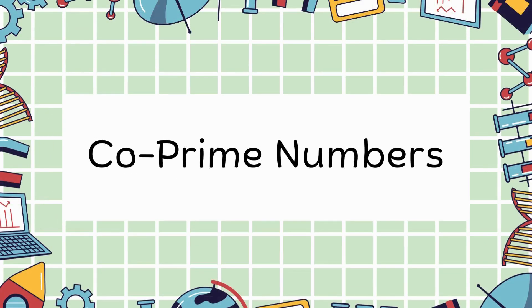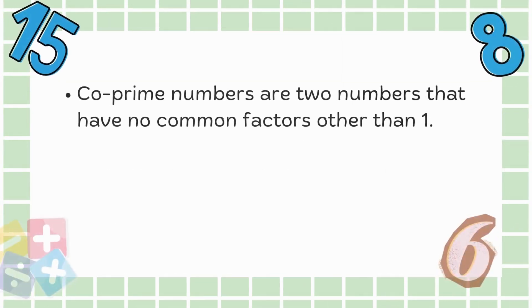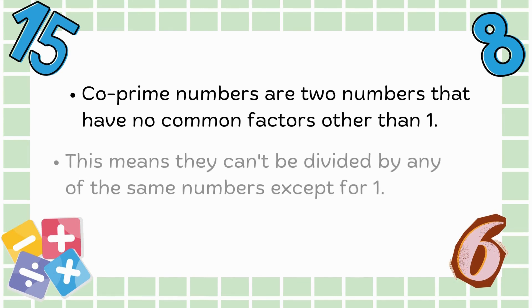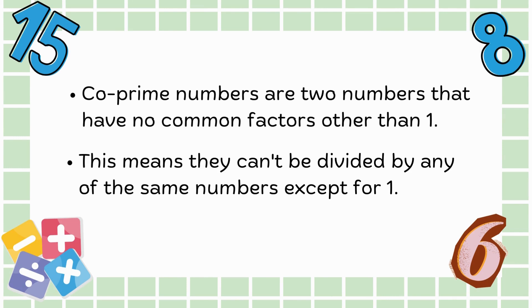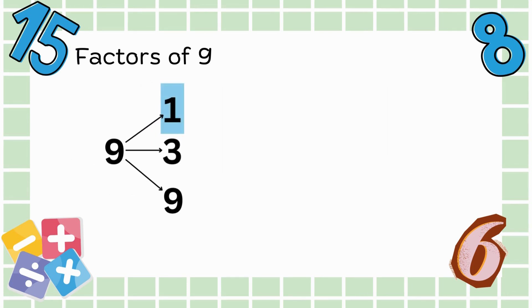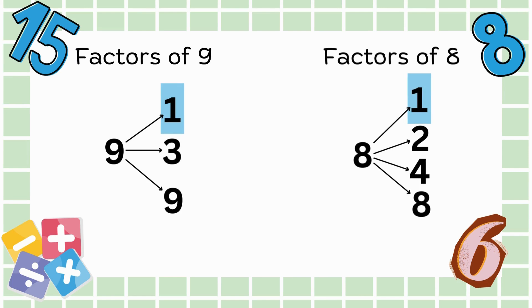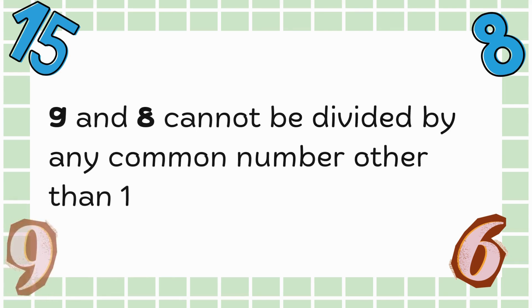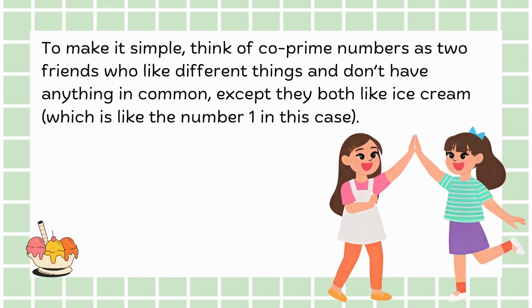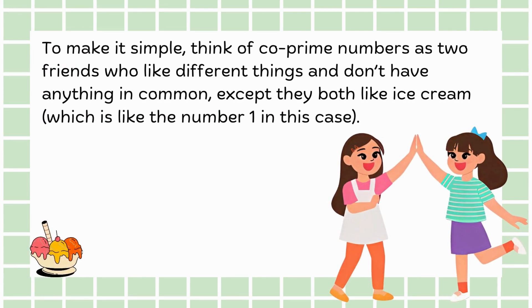Now, let's move on to co-prime numbers. Co-prime numbers are two numbers that have no common factors other than 1, meaning they can't be divided by any of the same numbers except for 1. For example, the factors of 9 are 1, 3 and 9, while the factors of 8 are 1, 2, 4 and 8. So 9 and 8 cannot be divided by any common number other than 1. Think of co-prime numbers as two friends who like different things and don't have anything in common except they both like ice cream, which represents the number 1.